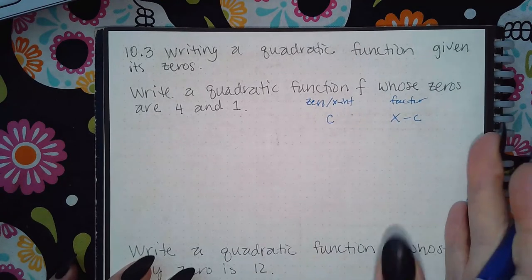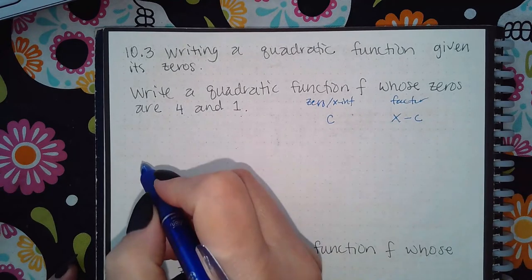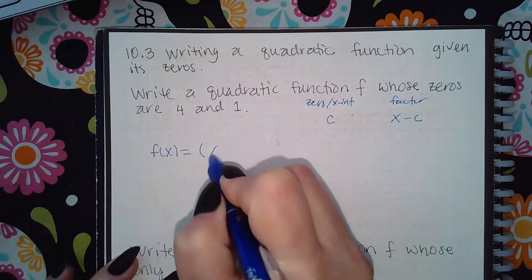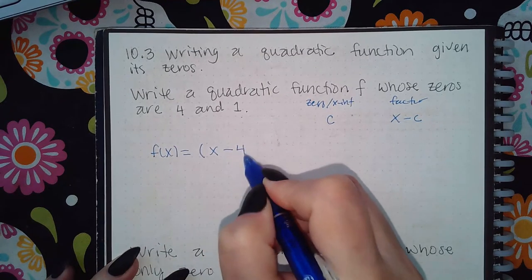If you have a quadratic with these zeros, the function is just going to look like x opposite sign, so minus 4, and then x opposite sign, so minus 1.